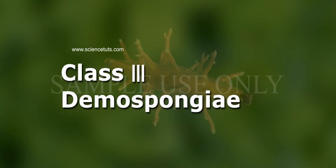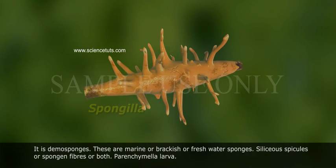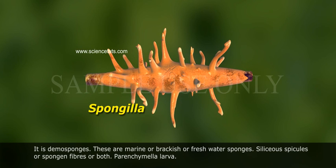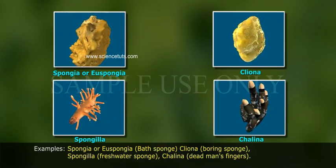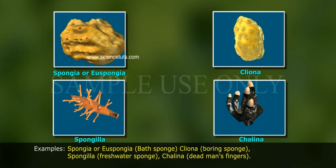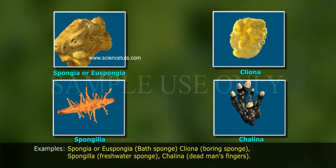Class 3: Demospongiae. These are marine, brackish, or freshwater sponges. Siliceous spicules or spongin fibers, or both, are present. Parenchymella larva. Examples: Spongia (Euspongia), Cliona (Boring sponge), Spongilla (Freshwater sponge), Chalina, Dead Man's Fingers.